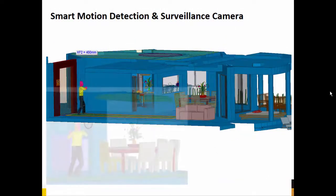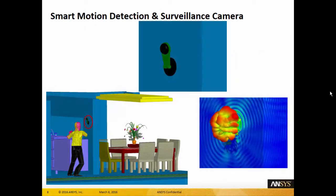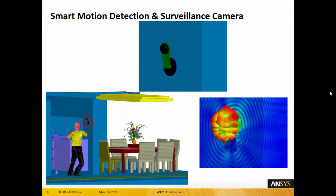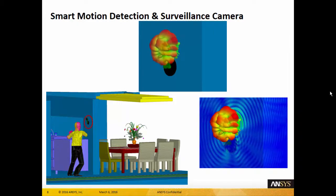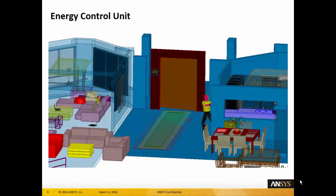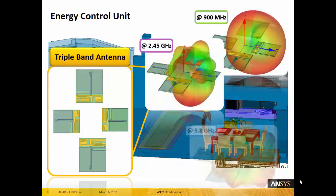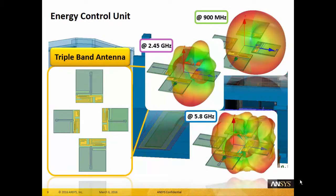As you're walking into the kitchen, a camera detects your motion and communicates this information wirelessly to the control unit of the smart house. The radiation pattern of the embedded antenna is shown. Coordination of the control unit with smart devices in the home environment is essential. The antennas in the control unit have been designed to operate in the necessary frequency bands.